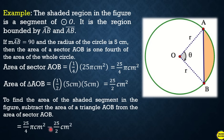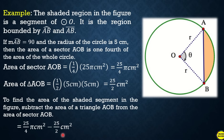So the area of the shaded segment is 25π/4 square cm minus 25/2 square cm, which equals approximately 7.135 square cm. You can verify this using your calculator.